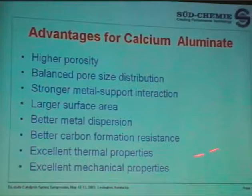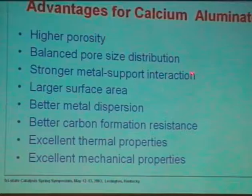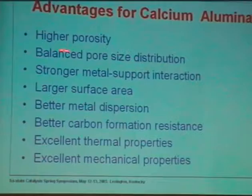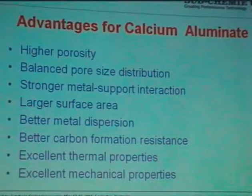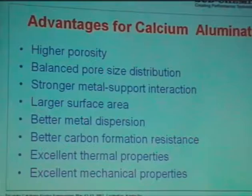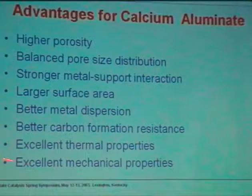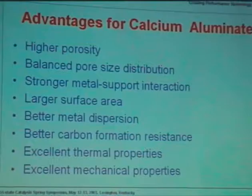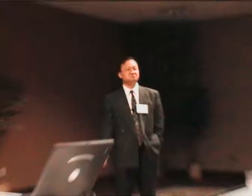To summarize: calcium aluminate has higher porosity and more balanced pore distribution, and we can see stronger metal-support interaction. It has a larger surface area, and because of those properties, it has better metal dispersion and better carbon formation resistance. We also tested thermal properties, and calcium aluminate shows better thermal stability in terms of structural integrity and thermal shock resistance. It also has good mechanical properties — for example, the 3 mm spheres can reach about 30–40 pounds of crush strength, which is significant and better than the alumina benchmark.